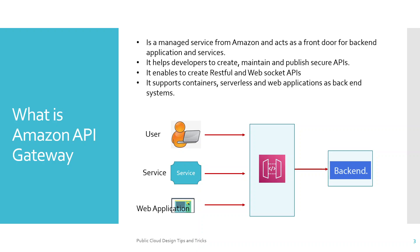AWS API Gateway is a managed service from Amazon and acts as a frontend for different backend applications. It helps developers create, maintain, and publish their secure APIs. It enables creation of RESTful services and WebSocket APIs, and supports container workloads, serverless workloads, and web application workloads as backend systems.